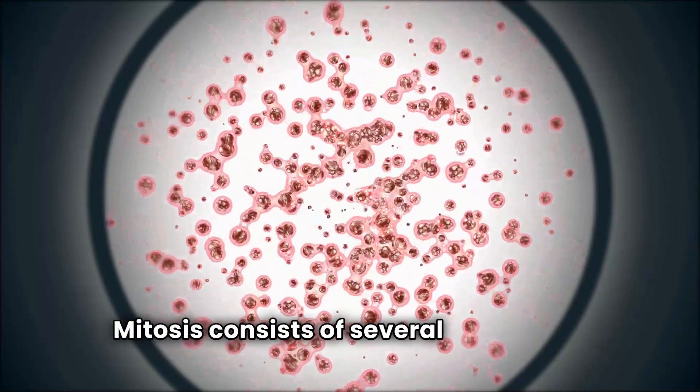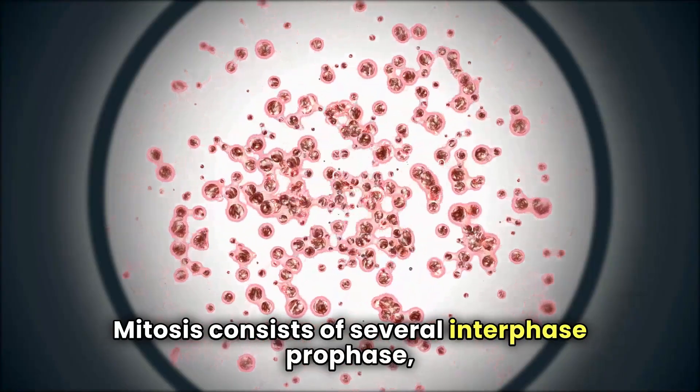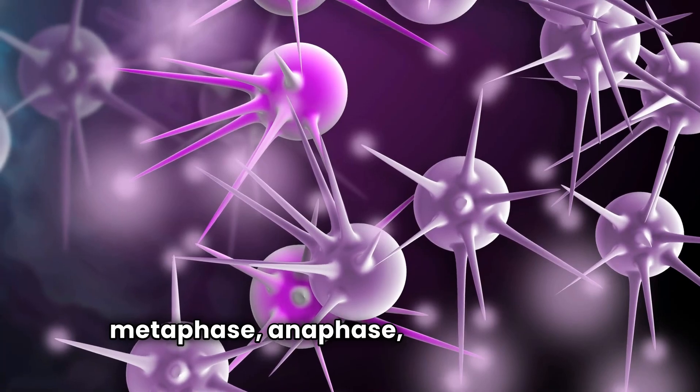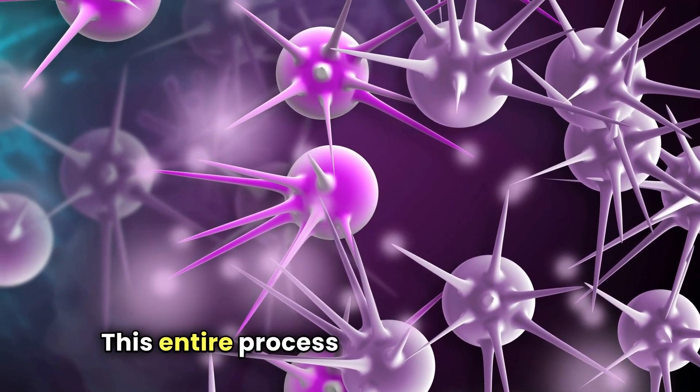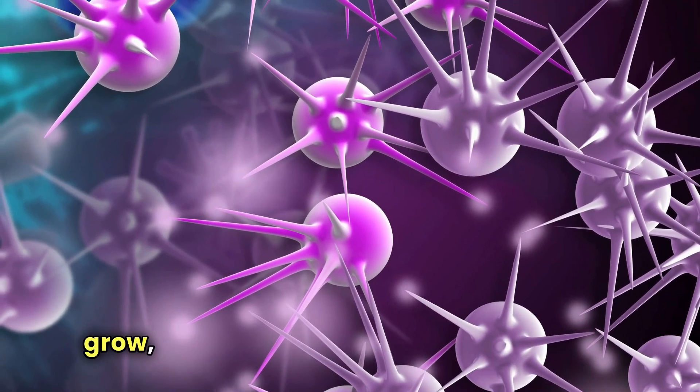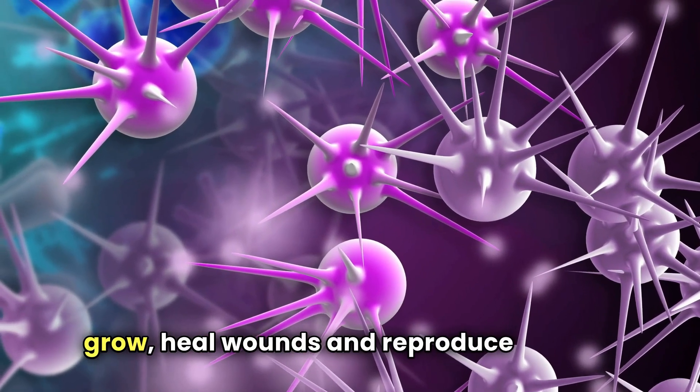Mitosis consists of several stages—interphase, prophase, metaphase, anaphase, telophase, and cytokinesis. This entire process allows organisms to grow, heal wounds, and reproduce rapidly.